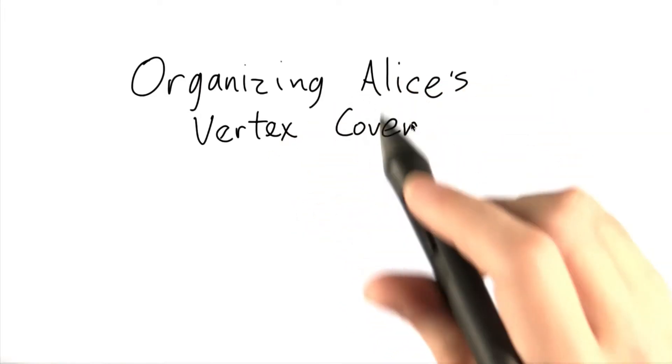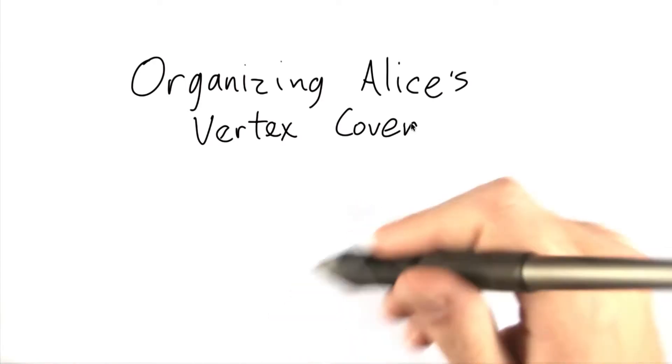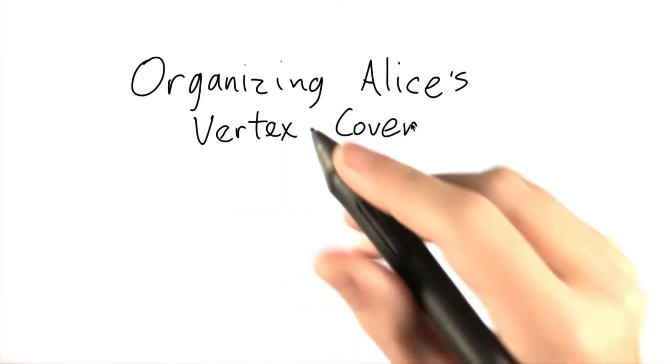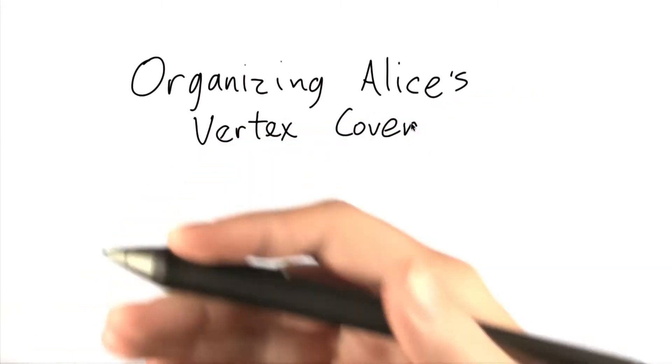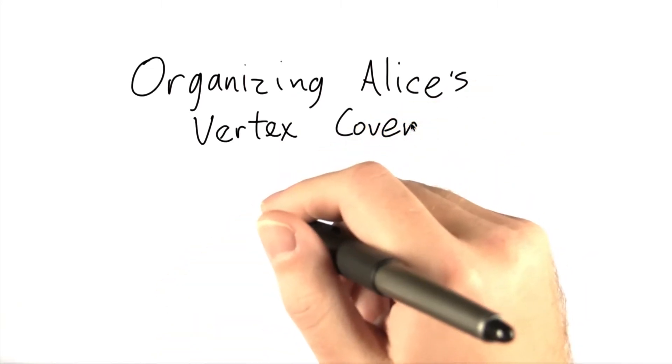Alright, so let's say we wanted to try Alice's vertex cover a little bit smarter. So let's look at Alice's vertex cover. The main thing that happens, the key idea is that we're just going to try every single possible assignment of a cover to the underlying graph.